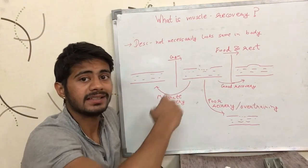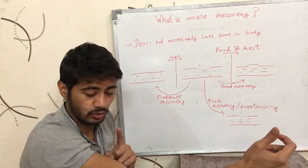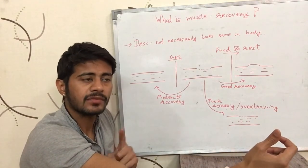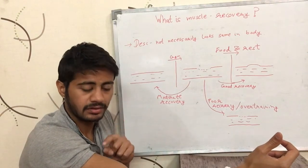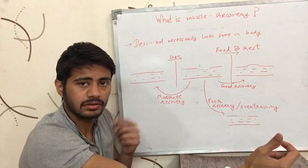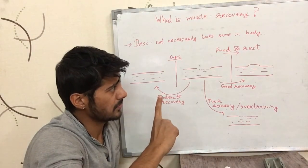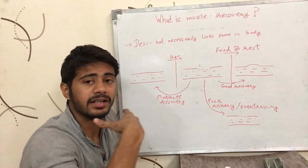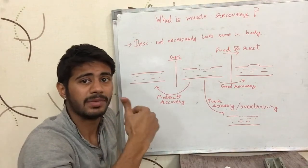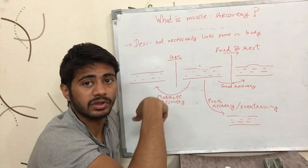Now, as I have trained my bicep yesterday, I should not be training it today. I should give it at least rest of 48 hours on the whole. So I can train any other part - chest, shoulder, leg, back - but I should not be training bicep. So I should give it rest.